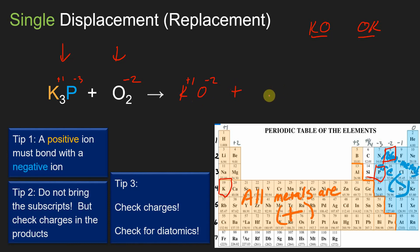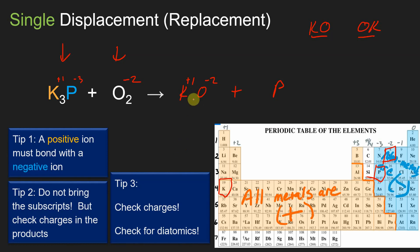Phosphorus ends up by itself. Is phosphorus a Brinkelhoff element? No, so there's no subscript two on it. For the compound K-O, we check charges: potassium is plus one and oxygen is minus two, so the final formula is K₂O. Then we erase the charges and balance the equation.